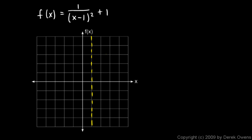If you plot some points or plot this on a graphing calculator, you realize there's a horizontal asymptote at y equals 1. It goes through the point (0, 2) and the point (2, 2). The curve goes up on both sides of the vertical asymptote, getting closer and closer to the horizontal asymptote. That's not a cusp — it's a nice smooth curve through those points.